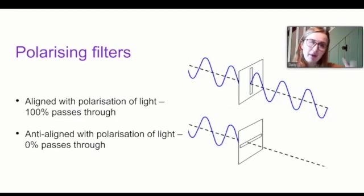But if we rotate that filter by 90 degrees, you can see that actually none of that light can get through because the filter is in the wrong direction. And the light is oscillating this way. The filter is like this. And it just can't get through. So if it's anti-aligned to the polarisation of light, 0% of that light will pass through.